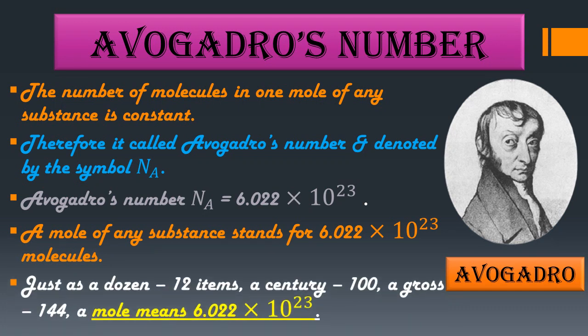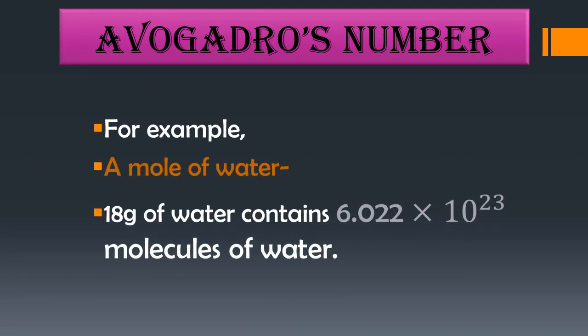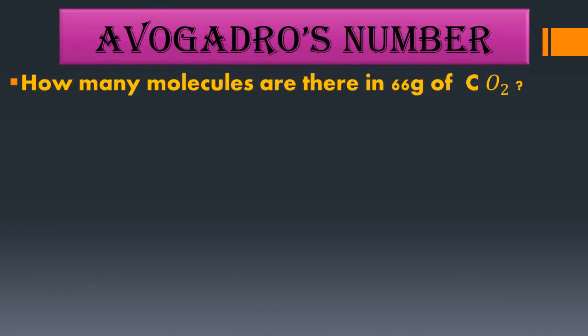Just as a dozen has 12 items, a century has 100, and a gross has 144, one mole means 6.022 × 10²³. For example, one mole of water (18 grams) contains 6.022 × 10²³ molecules of water — this quantity is fixed and constant.